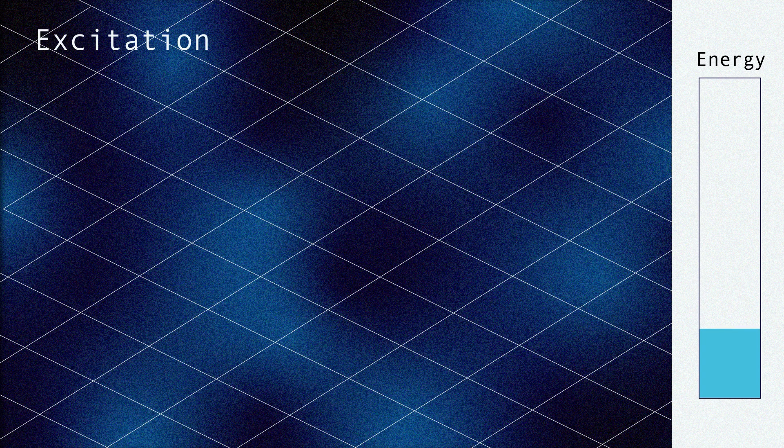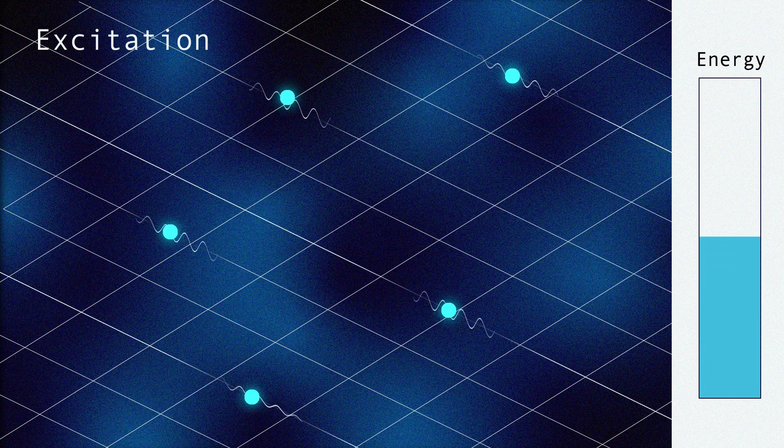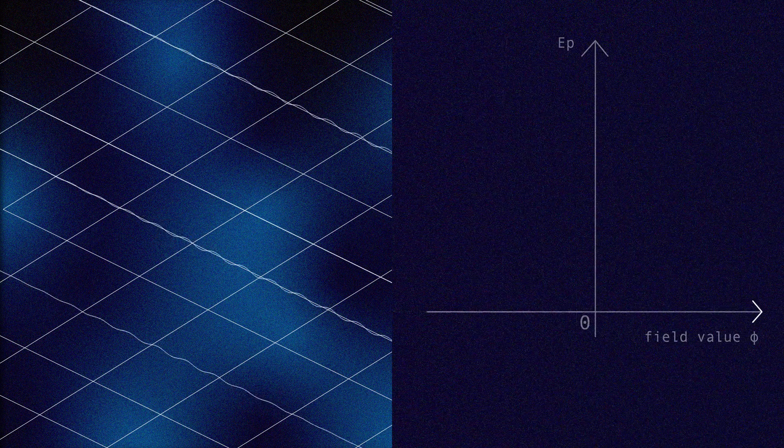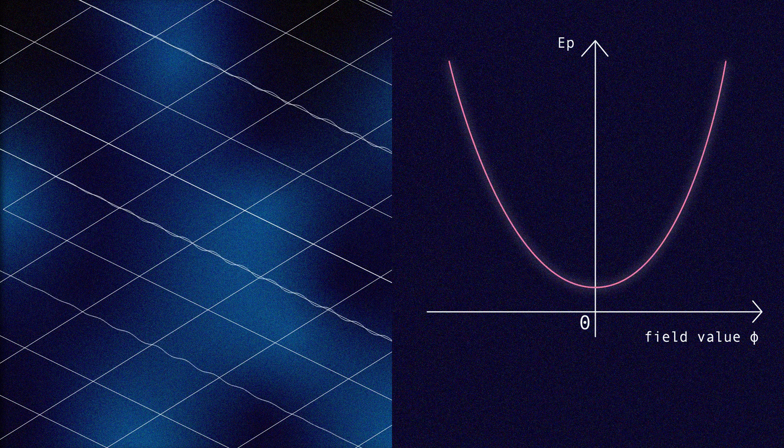Excitation is the process of adding energy, which can create particles. The less energy a field has, the fewer particles it can contain, rendering it more stable. The most stable state, the vacuum state, has minimum energy, where the field's average value is zero, and generally no particles are present.